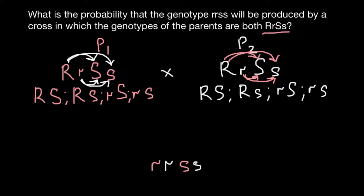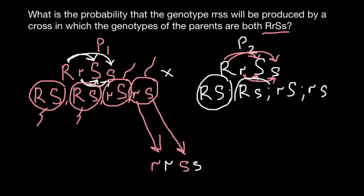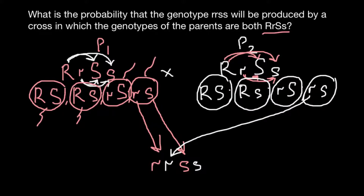So, we have four different types of gametes. And if you take a look, only one type of gamete can produce this genotype — when we would have this small r from here and this small s from here. So parent one can be male, so these gametes would be sperm. And parent two can be female, so these gametes would be egg cells. Only this gamete can give small r and small s.